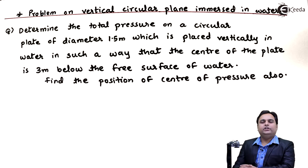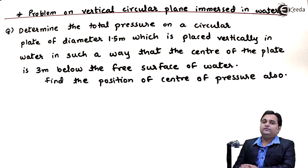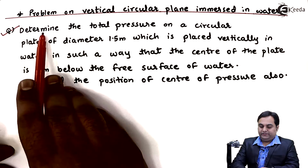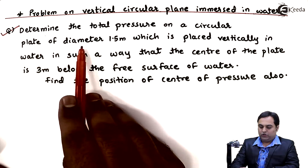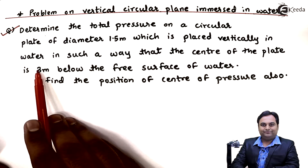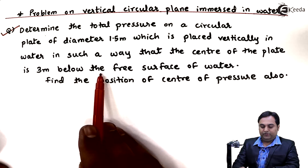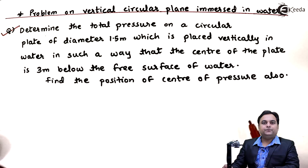Hello friends, in this video we will see a problem: if a circular plane is immersed in water, what is the force acting on it? The problem asks us to determine the total pressure on a circular plate of diameter 1.5 meter, placed vertically in water, such that the center of the plate is 3 meters below the free surface of water. We also need to find the position of the center of pressure.